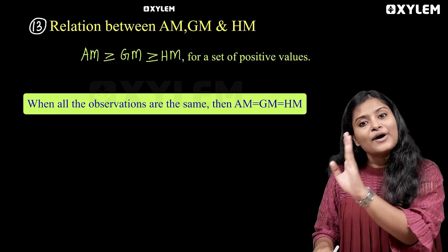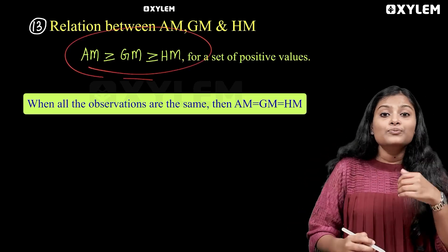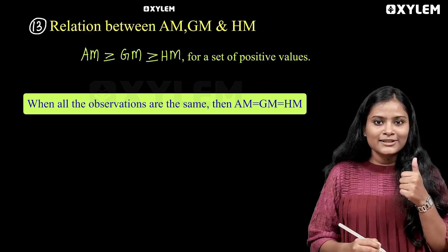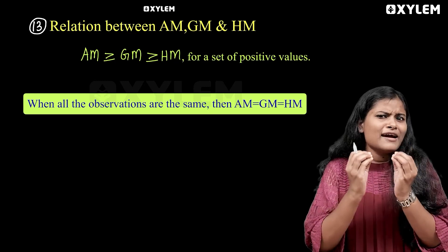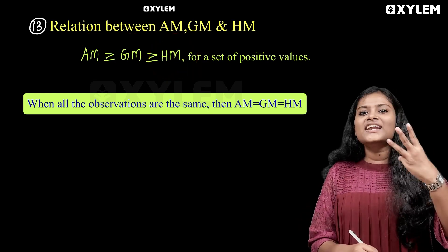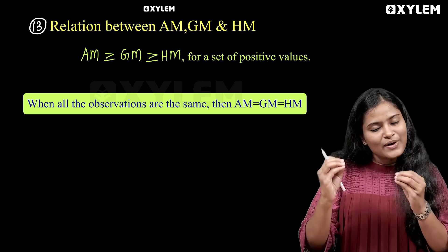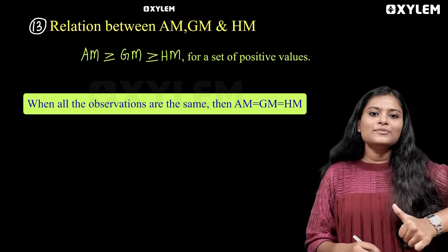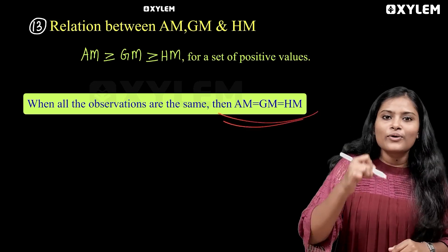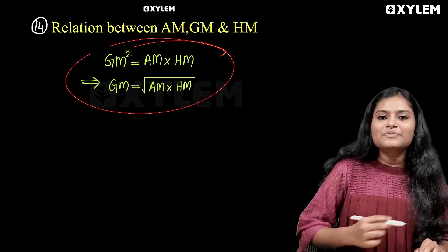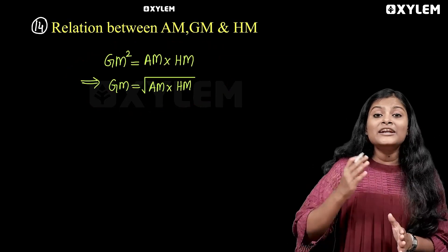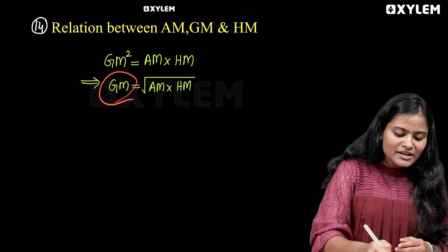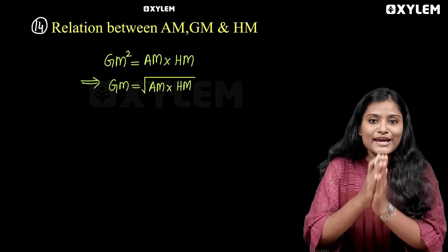The relationship between arithmetic mean, geometric mean, and harmonic mean: for a symmetric case with the same observations, arithmetic mean, geometric mean and harmonic mean are equal. The first relationship is: geometric mean is the product of the harmonic mean. That is, geometric mean is equal to the square root of arithmetic mean into harmonic mean.